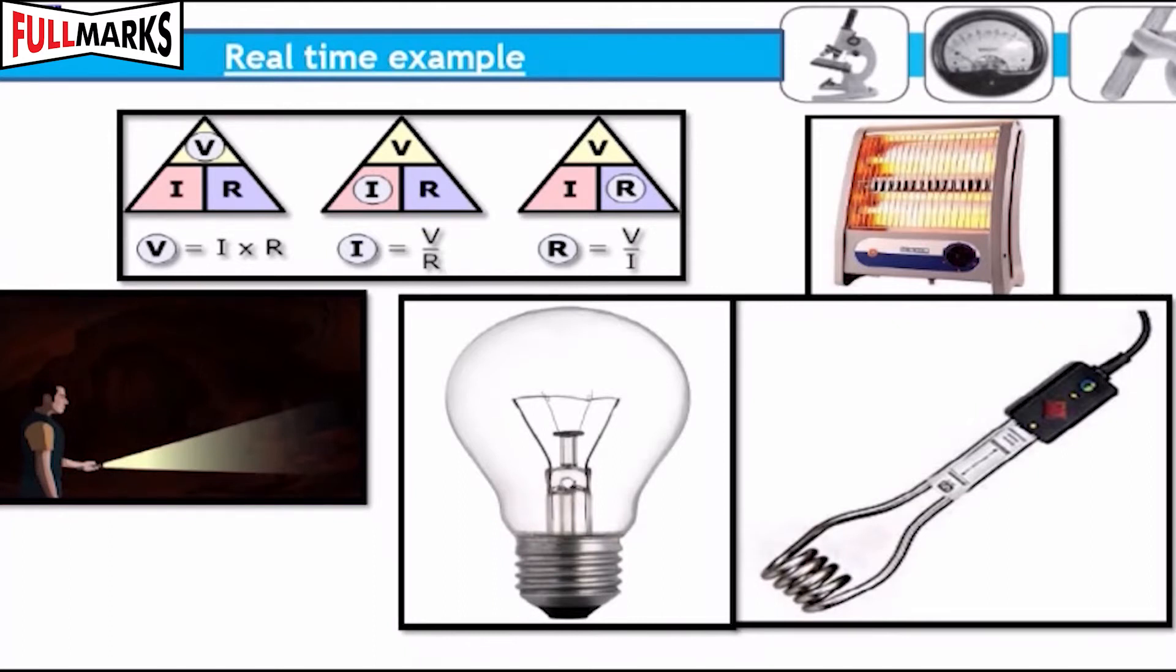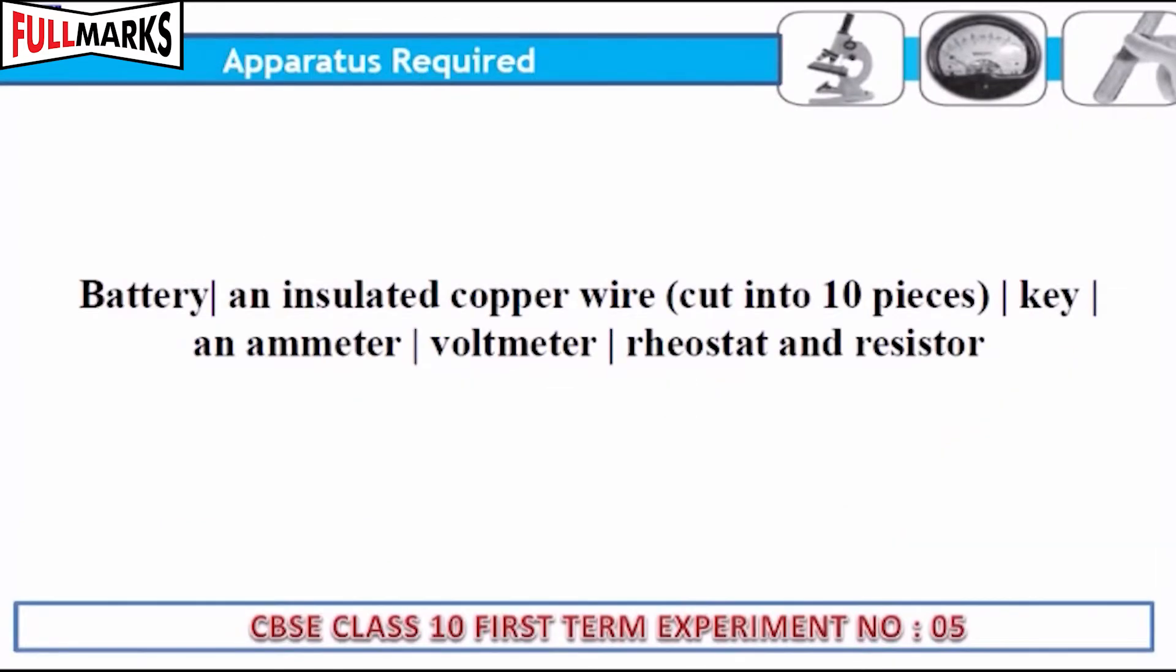Real-time examples: battery, torch, water heater, bulb are the real-time examples of Ohm's law. Materials required: battery, an insulated copper wire cut into three pieces, a key, an ammeter, a voltmeter, a rheostat, and a resistor.